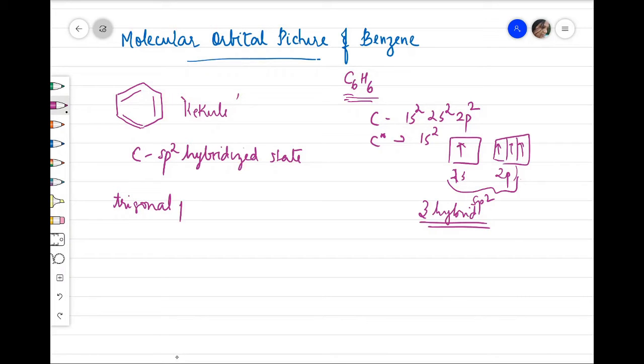These three hybrid sp2 orbitals will take a geometry which is trigonal planar. I will have carbon here, and the sp2 hybridization will give this shape of the orbital. If I am going to draw the orbitals, it will be something like this.